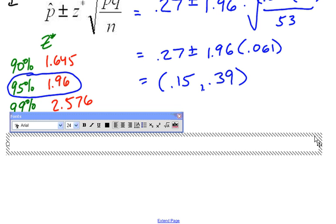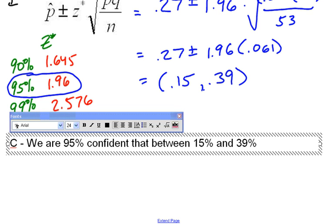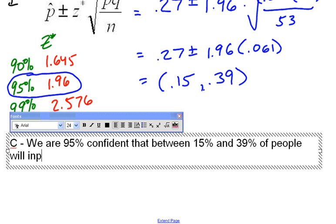And your conclusion should always include, for a confidence interval, three things. The confidence level, the confidence interval, and the context of the problem. So let me type it out here. We are 95% confident that between 15% and 39% of people will improve after using the new medication.